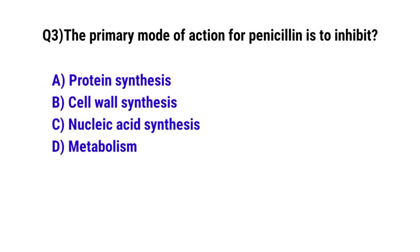Question number 3. The primary mode of action for insulin is to inhibit. The correct option is B: glycolysis synthesis.